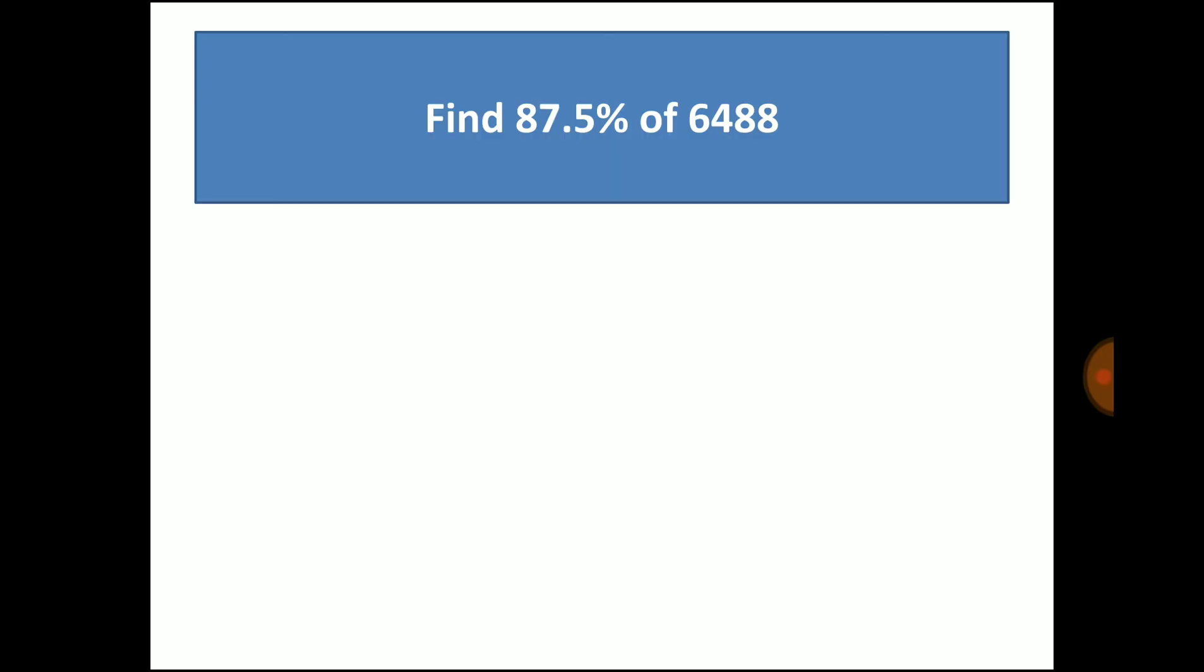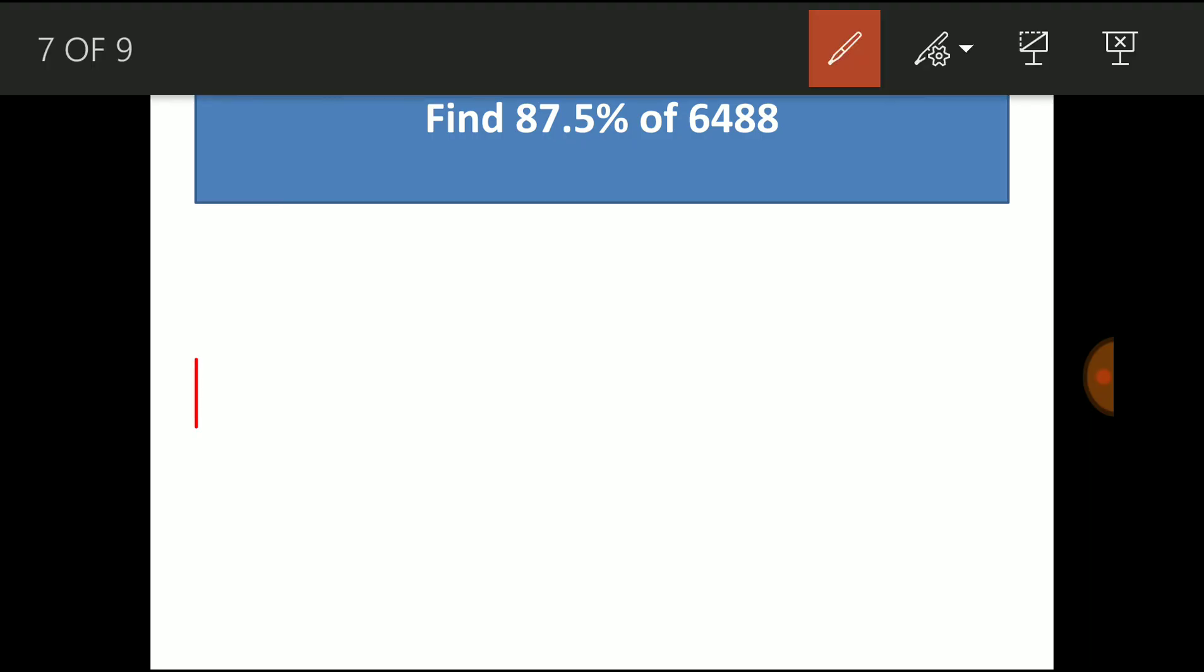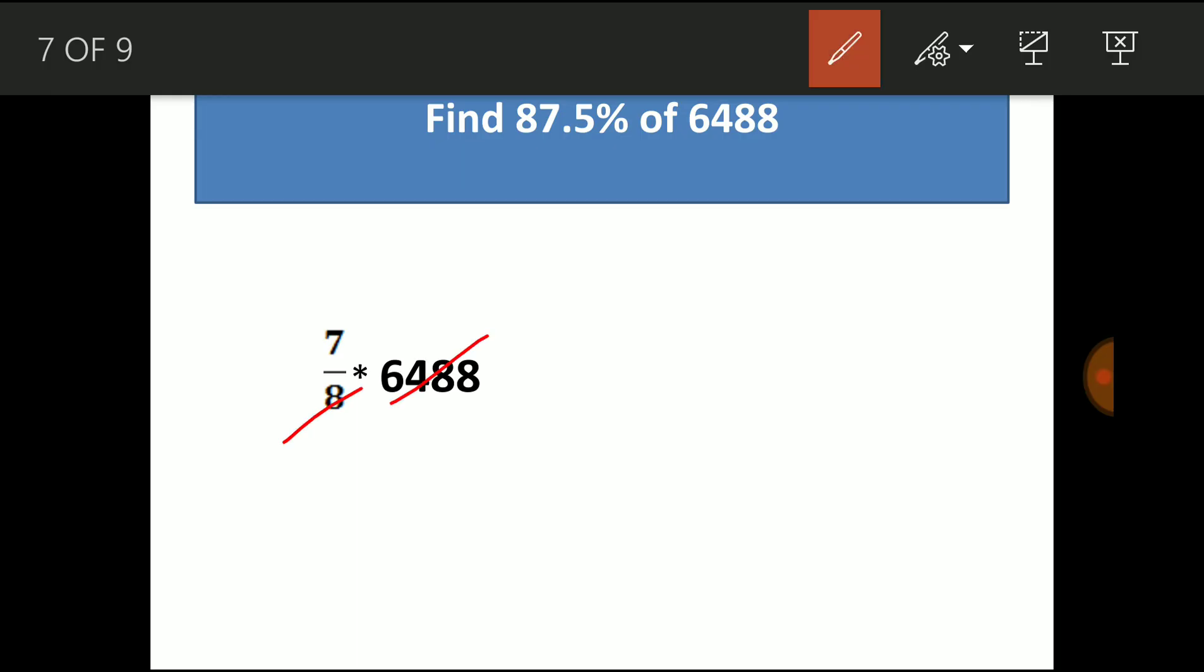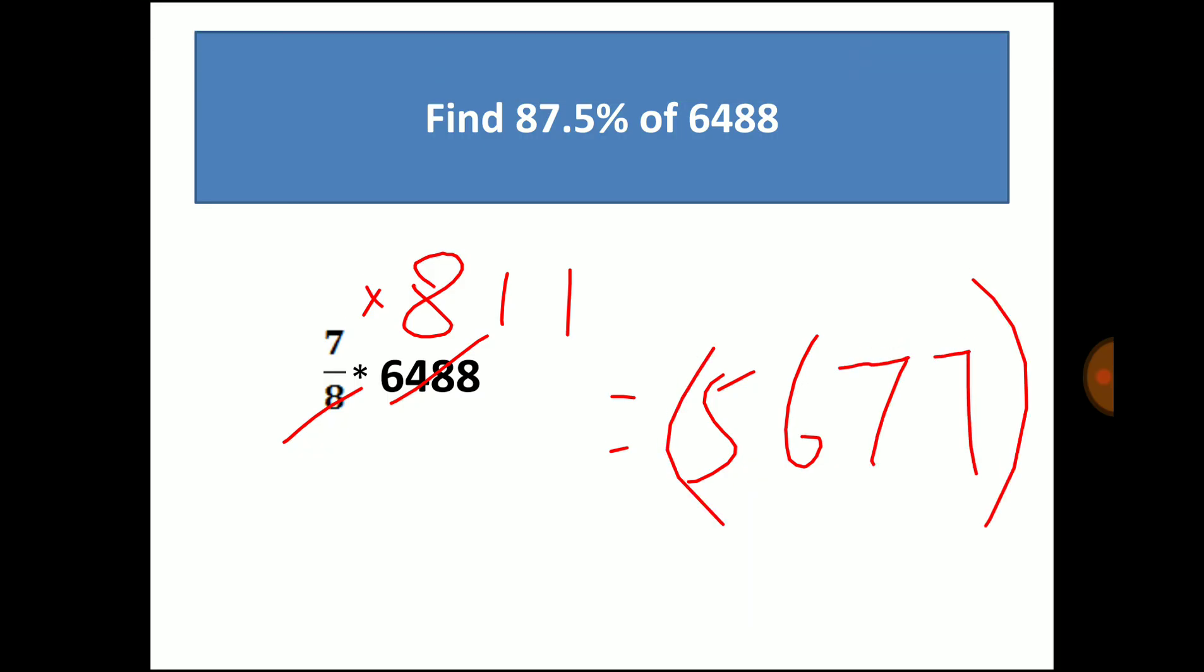Moving to another example, find 87.5% of 6488. So we don't have any equivalent fraction of 87.5%. Instead, you can create a new fraction. So we know 100% is 1. So 100% means 1 and 12.5% means 1 by 8. So 100 minus 12.5 gives 87.5. So 1 minus 1 by 8 gives 7 by 8. So 7 by 8 is 87.5%. So instead of 87.5%, we can make it as 7 by 8. Now let us solve this question using 7 by 8. So 7 by 8 into 6488, cancel these numbers. 8 eights are 64, 1 eight is 8, 1 eight is 8. So 7 into 8, we get 5677. So 5677 is 87.5% of 6488.